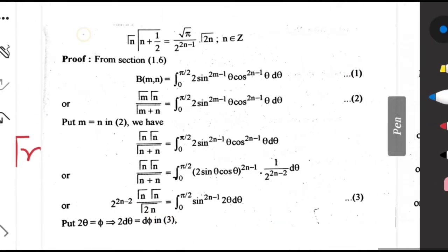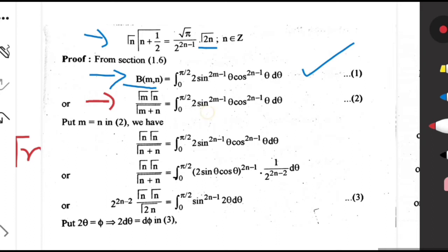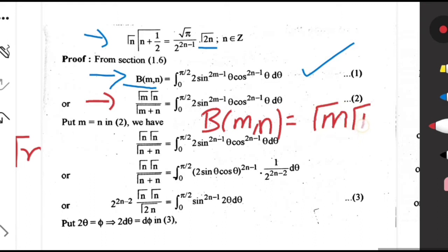Next is the duplication formula. We have to prove that Γ(m)·Γ(n + 1/2) = (√π / 2^(2n-1))·Γ(2n). For this we will use the alternative form of the beta function written in terms of sine and cosine. In the next step we use the relation B(m,n) = Γ(m)·Γ(n)/Γ(m+n).